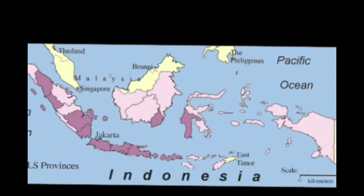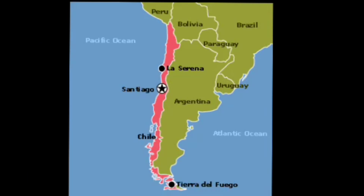There are five state shapes. The first is fragmented — when the state exists in several pieces, such as lots of islands. Indonesia, for example, is made up of 16,000 islands. The problem with this shape is that it can be hard to maintain unity between the parts. The second type is elongated: these states are long and thin, such as Chile. This shape can cause transportation problems and can be difficult for a state's capital to maintain influence over the entire length of the state.